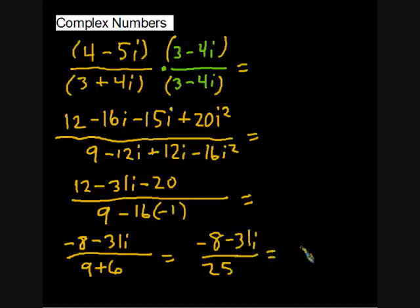So negative 8 minus 31i over 25. And then technically to write this as a complex number, we'll make it into negative 8 over 25. That's the real part. And then minus 31 over 25. That's the imaginary part. And then we'll go ahead and we'll put the i right after it. So that's how you divide by a complex number.